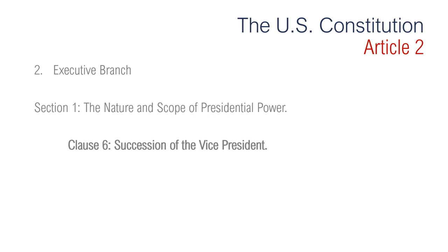Section 1, Clause 6 is regarding succession of the vice president. It says in case of the removal of the president from office, or of his death, resignation, or inability to discharge the powers and duties of the said office, the same shall devolve on the vice president. Congress may by law provide for the case of removal, death, resignation, or inability of both the president and vice president, declaring what officer shall then act as president. This section provided for the method by which the vice president was to succeed to the presidency, but its wording is ambiguous — it was replaced by the 25th Amendment.